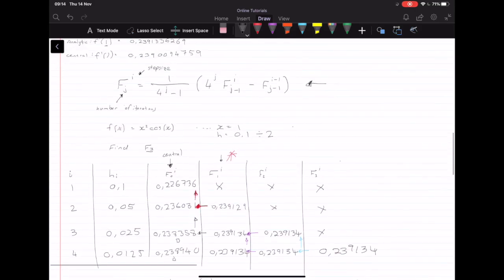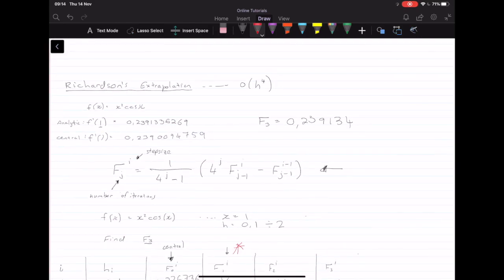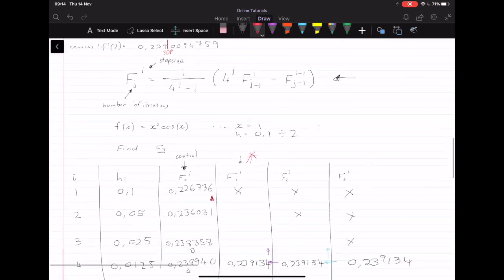So using Richardson's extrapolation, let's put the value right here, we have f³ equals 0.239134. And if we look for the error here, let's see the analytical solution. If we rounded this, it's right about here, 1, 2, 3, 4, 5, 6 decimal places. So 6 decimal places accurate. And if we look at comparing it to the central difference, we only have about 3 decimal places of accuracy. So Richardson's table is actually quite easy.